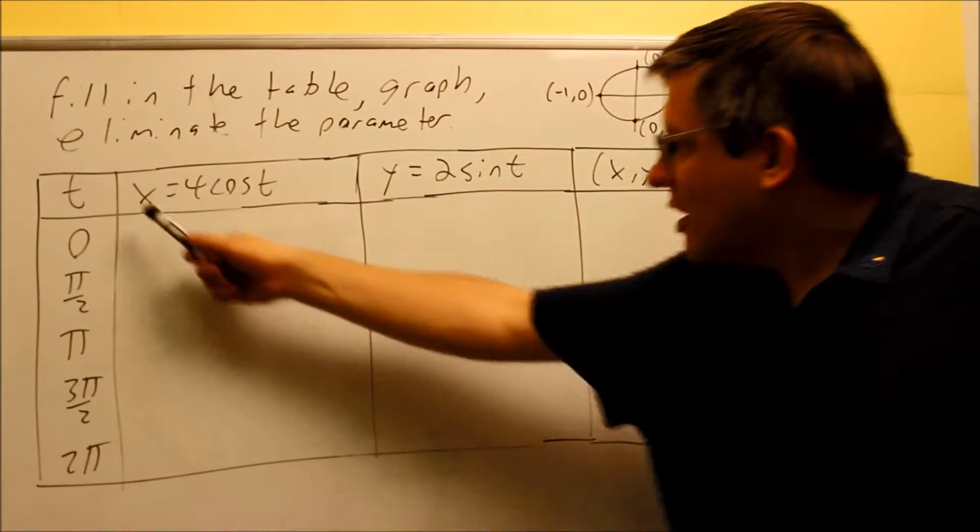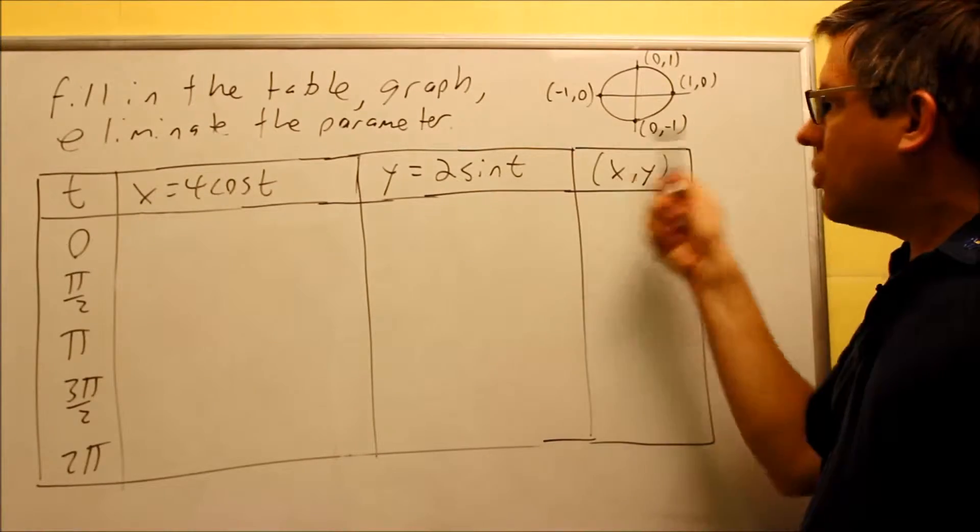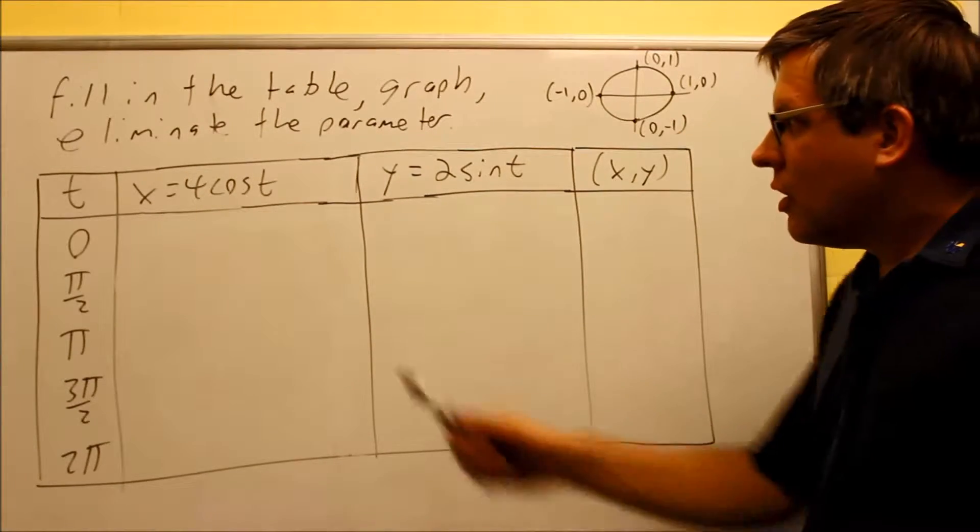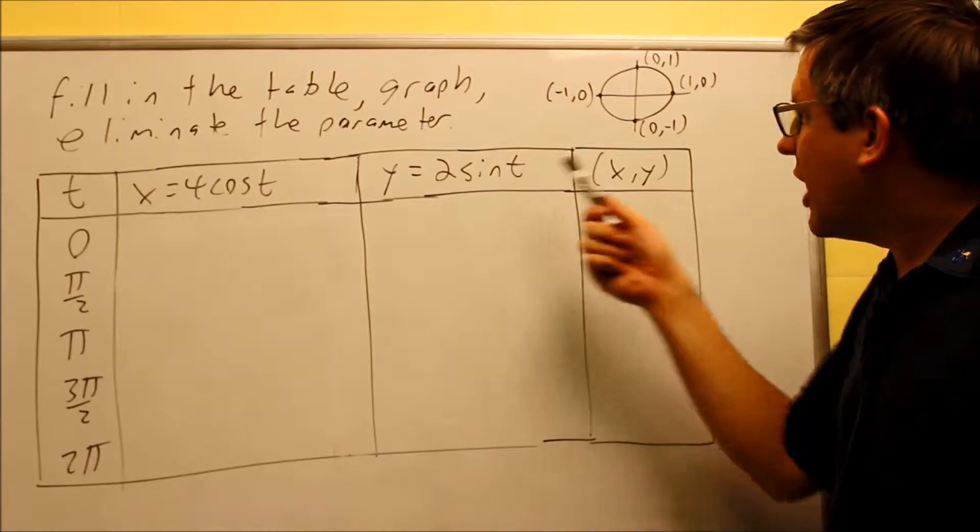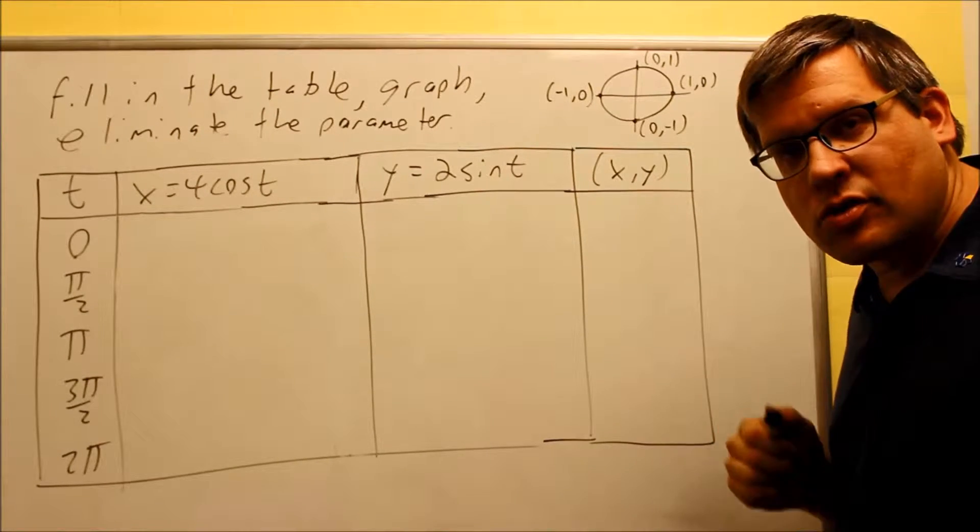So each of these, I'm going to have to refer to this unit circle in order to get the value. The cosine refers to the x-coordinate on the unit circle. The sine refers to the y-coordinate on the unit circle.